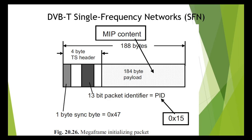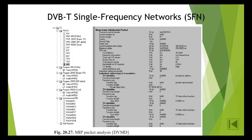Look at figure number 26. Reliable reception is then only possible with directional reception close to the transmitter. For this reason, the MIPs in the transport stream arriving at the transmitter are often monitored by using an MPEG-2 test decoder. Figure 26 shows the mega frame initializing packet — it clearly shows that the multiplexed MPEG-2 stream is now carrying a further table-like packet, namely a MIP packet.